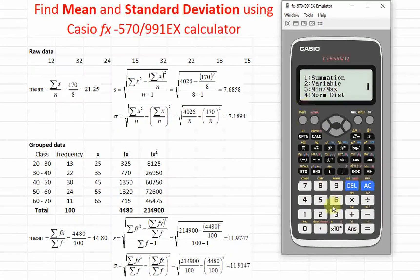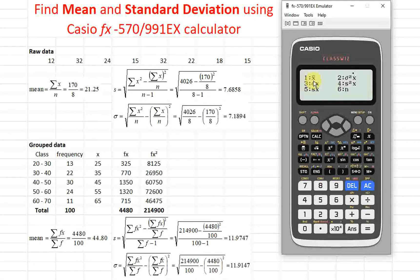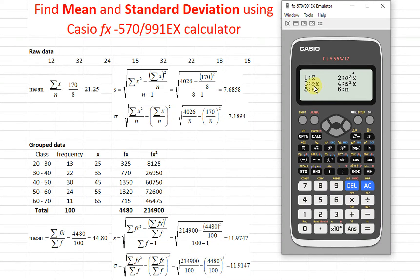Then we will have the mean, the standard deviation for population and sample type. If let's say we want the summation x squared, so we look for summation 1.